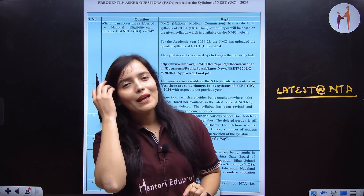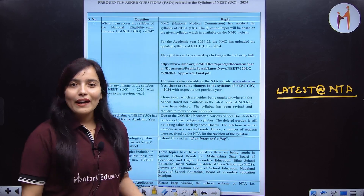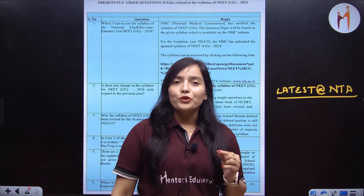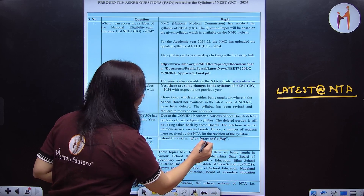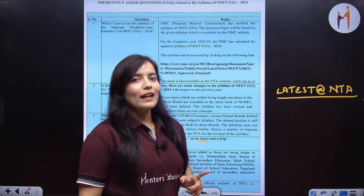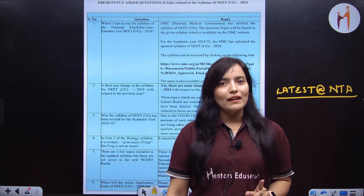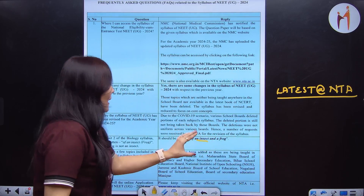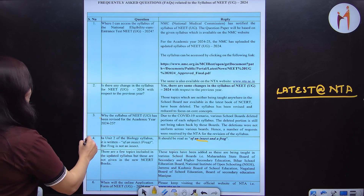You have to read the cockroach — cockroach is in your syllabus. The frog is in the new NCERT. In the new NCERT, there is no cockroach, but in the syllabus you have to read the insect mentioned here. So you have to follow the old NCERT and read both the cockroach and the frog. This was the first confusion, which is now clear.